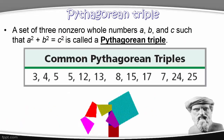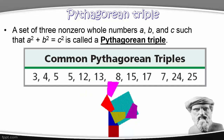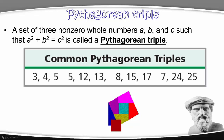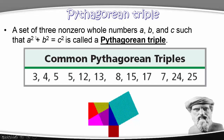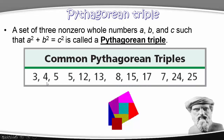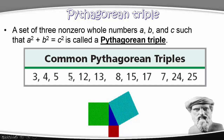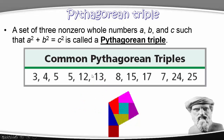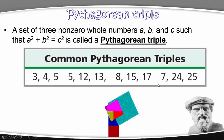The next topic is Pythagorean triples. These are sets of three non-zero whole numbers A, B, and C that obey the Pythagorean rule. For example, 3 squared plus 4 squared equals 5 squared, and 5 squared plus 12 squared equals 13 squared. All three values must be whole numbers that satisfy the Pythagorean theorem.